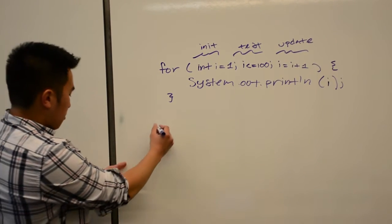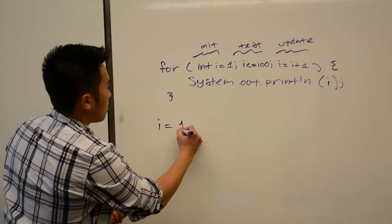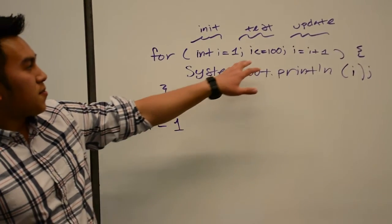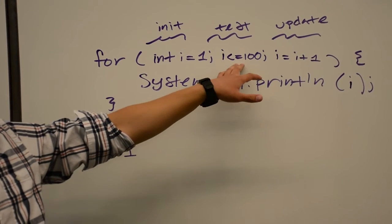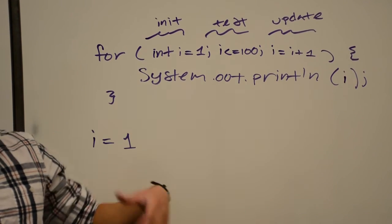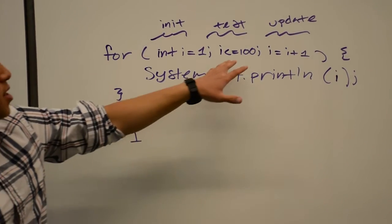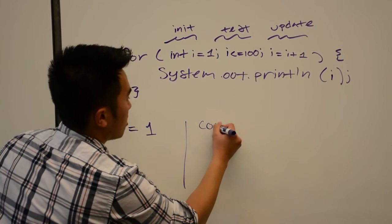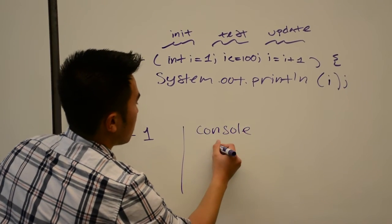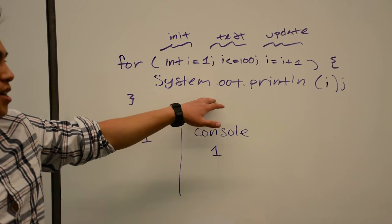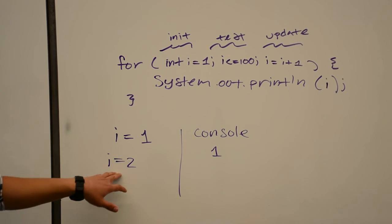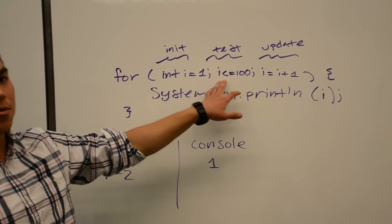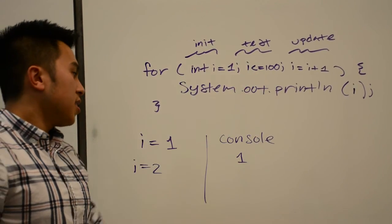So when i equals 1, we check to see if i passes our test. It's initialized to 1, so if it passes our test right away, then we're going to go into the for loop. So it does pass, we're going to print 1 because that's what i is. Now i equals 2. Now we're going to check again, is 2 less than 100 or equal to 100? Yes.